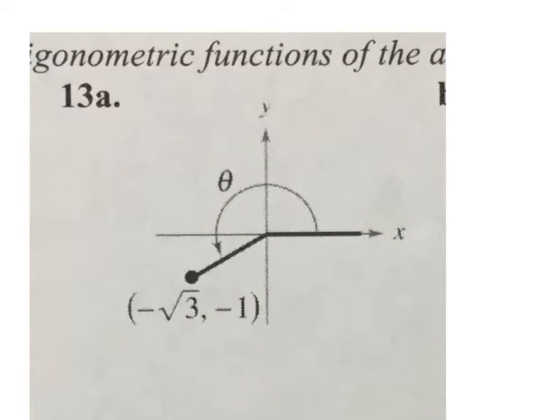We are trying to find the values of the six trig functions: sine, cosine, tangent, cosecant, secant, and cotangent, given this angle theta. This is a third quadrant angle. We notice that both the x and y values are negative in the third quadrant, which is good, but we're not actually going to use that angle because we want to make a right triangle.